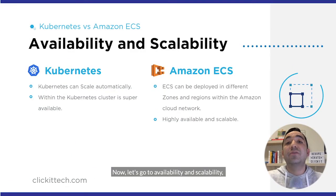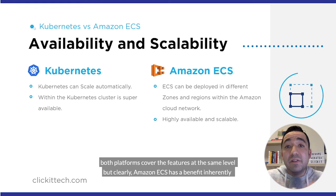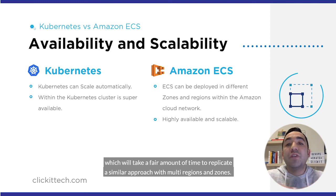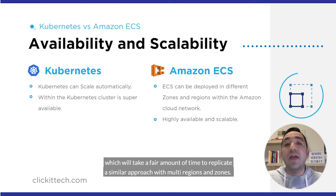Now let's go to availability and scalability. Both platforms cover these features at the same level. But clearly, Amazon ECS has an inherent benefit, since services can be deployed in different availability zones, versus Kubernetes on-prem, which will take you a fair amount of time to replicate a similar approach with multi-region and zones.